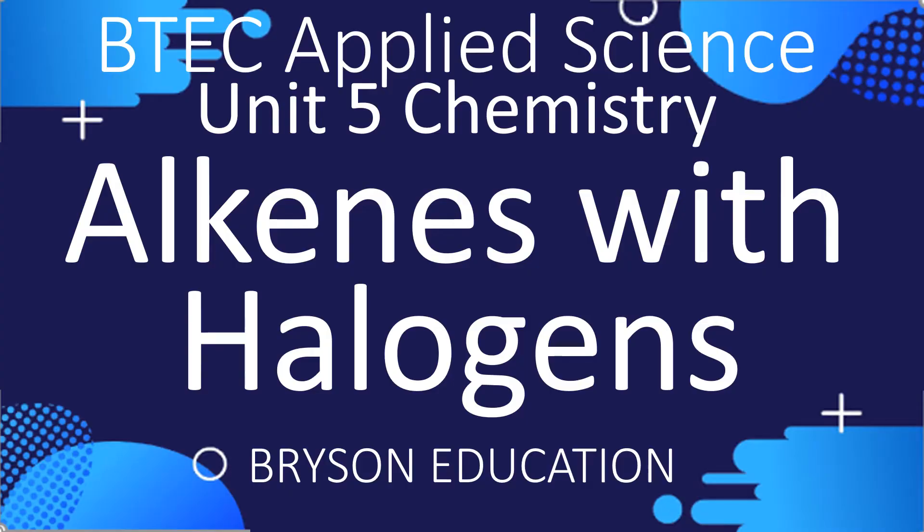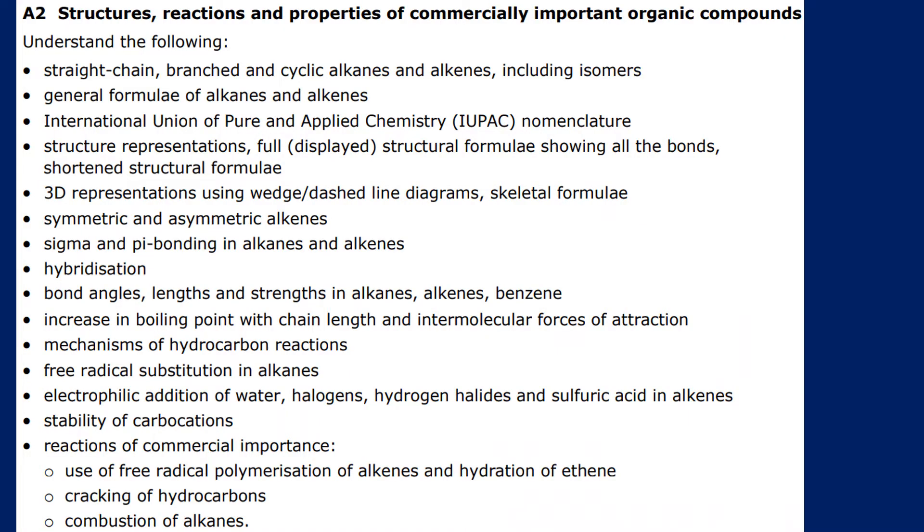Hello there, welcome to my channel on chemistry lessons. This is a BTEC Applied Science Unit 5 chemistry lesson and it's going to look at the reaction of alkenes with halogens. So where does this sit with the specification then? There's four reactions we need to know: water, halogens, hydrogen halide, and sulfuric acid.